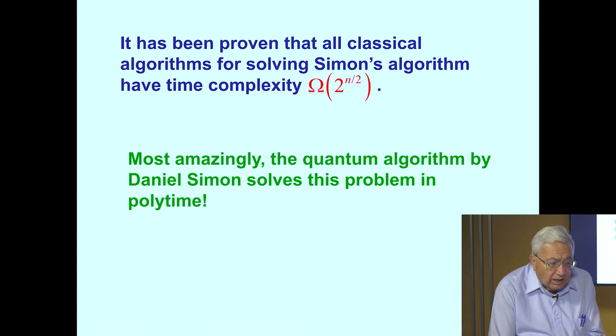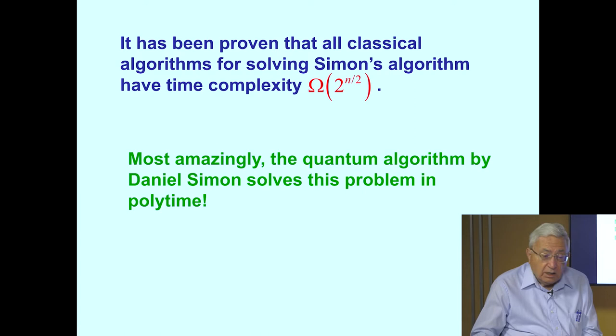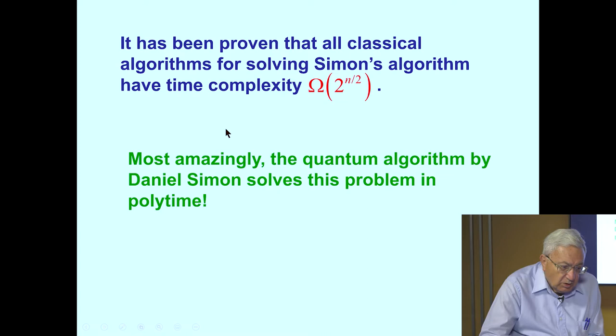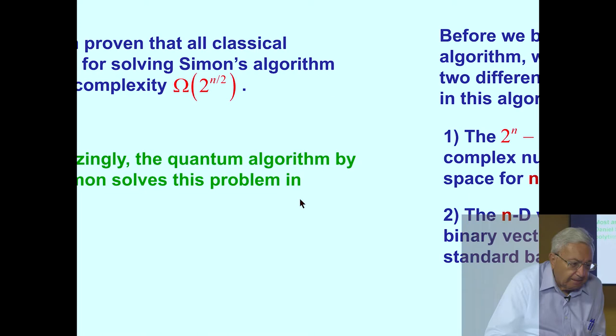It has been proven that all classical algorithms for solving Simon's problem have time complexity, big O, of 2 to the n over 2. Most amazingly, the quantum algorithm by Daniel Simon solves this problem in polynomial time. This is surprising, because Daniel Simon was trying to debunk quantum computing and developed an algorithm that has improved the efficacy of quantum computing.